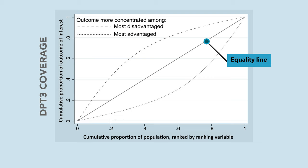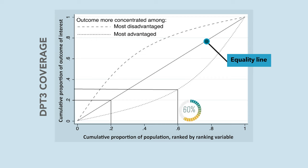If the outcome is more concentrated towards the most advantaged groups, or the richest groups in our example, the curve will be drawn below the equality line. In contrast, if the outcome is more concentrated towards the most disadvantaged groups, or the poorest groups, the curve will be drawn above the equality line. Now let's take a look at another example in which there is inequality and it favours the richest groups. We can see that the poorest 60% of our population only received 30% of our outcome, meaning 70% of the vaccines is concentrated in the richest individuals.